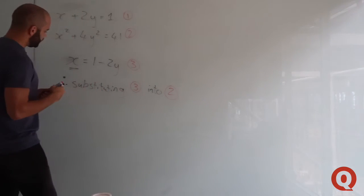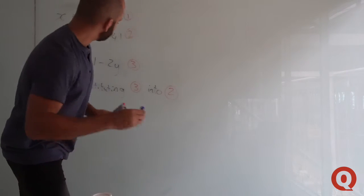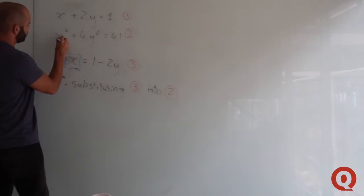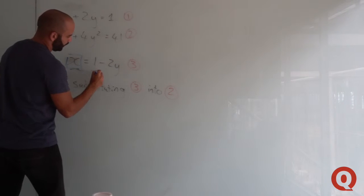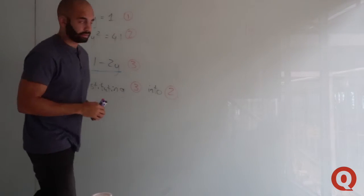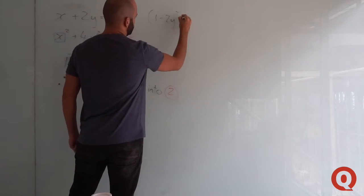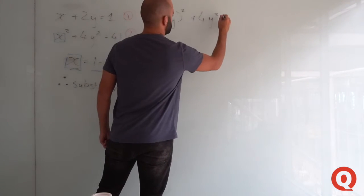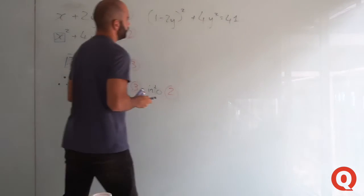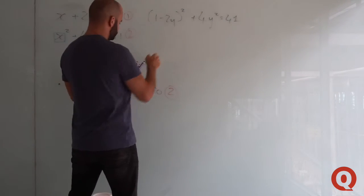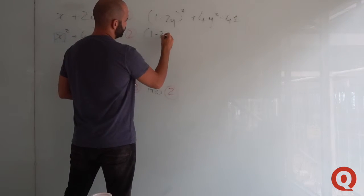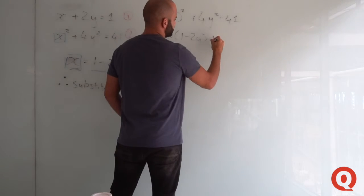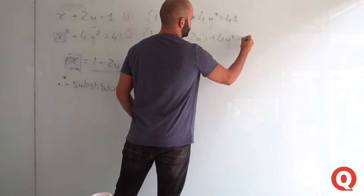Wherever we see x in equation two, we're going to substitute in 1 minus 2y. So we have (1 minus 2y) squared plus 4y squared equals 41. Expanding this out, you'd have (1 minus 2y)(1 minus 2y) plus 4y squared equals 41.